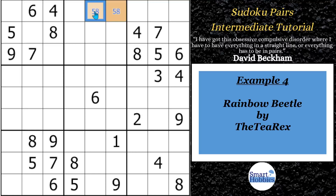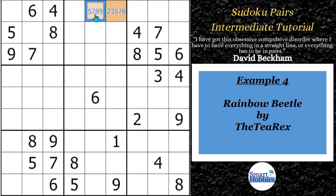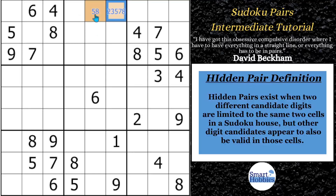If you looked at it, you would notice that you could have a one, two, three, seven, and nine possible in this cell, and a two, three, seven along with the five and eight in the other cell. But since we know that one cell has to contain a five and one has to contain an eight — because they don't fit anywhere else in block two — we can eliminate all those other candidates. This is called a hidden pair. A hidden pair exists when two different candidates are limited to the same two cells of a Sudoku house, but other digit candidates appear to be valid in those cells. The limited digits are hidden among other candidates, but are the only viable candidates for those two cells.